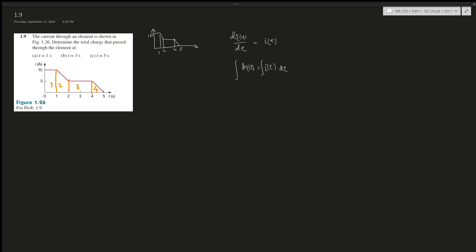So we take the integral from time t1 to t2, which gives us q(t), which is charge. We want to find the total charge passing through the element at 1, 3, and 5 seconds. We can find the equation of the graph at different intervals and sections.